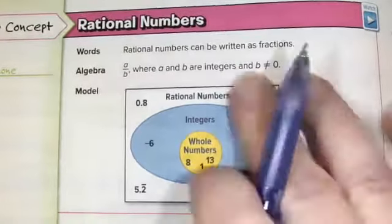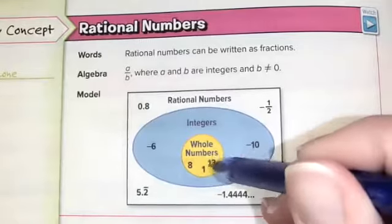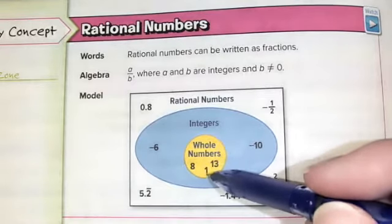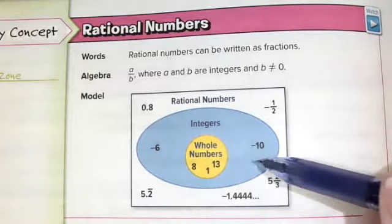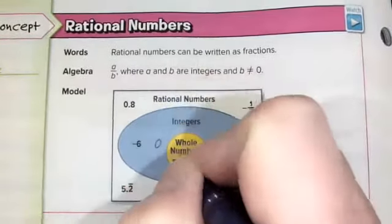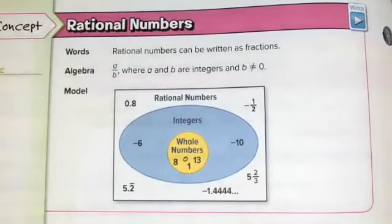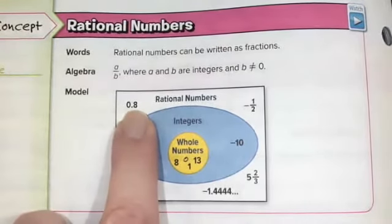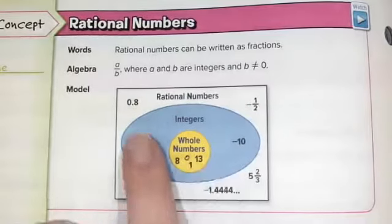These are all examples of rational numbers. Rational numbers include whole numbers in the inner circle — whole numbers are zero plus all of the counting numbers. Integers are all of the whole numbers plus their opposites: negative ten, negative nine, negative eight, negative seven — those negative integers — and positive integers. Zero is included in both groups. Rational numbers are numbers that can be written as fractions; so even though 0.8 is a decimal, it's eight tenths and I could write it as a fraction — eight over ten or four over five. We're going to look at ways that we can represent rational numbers.